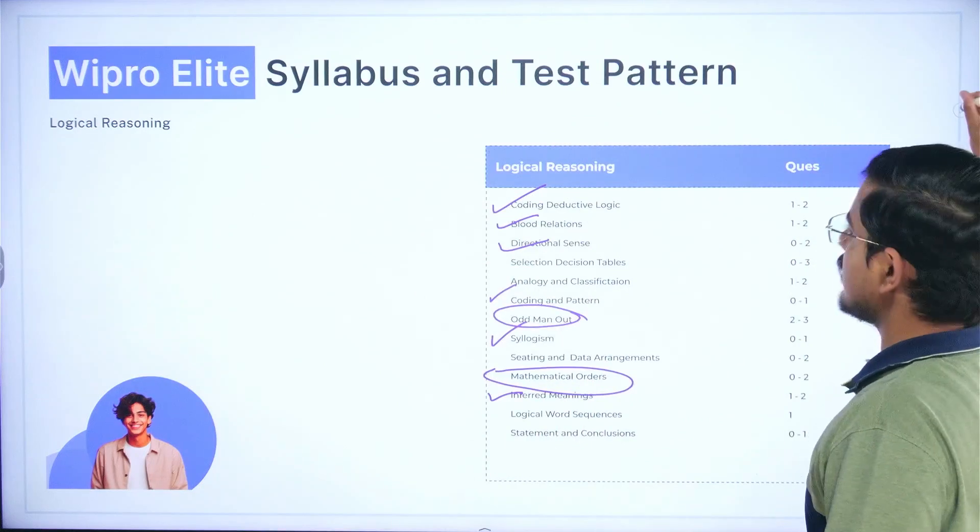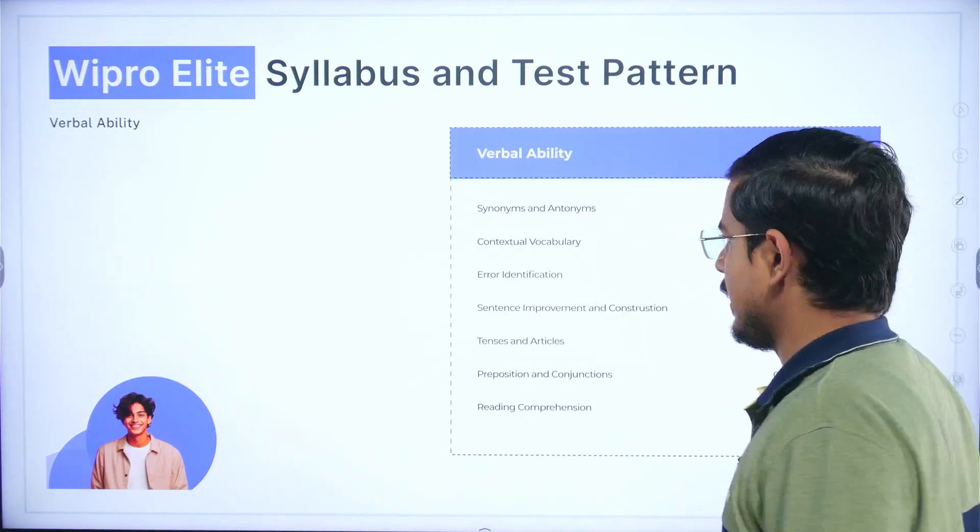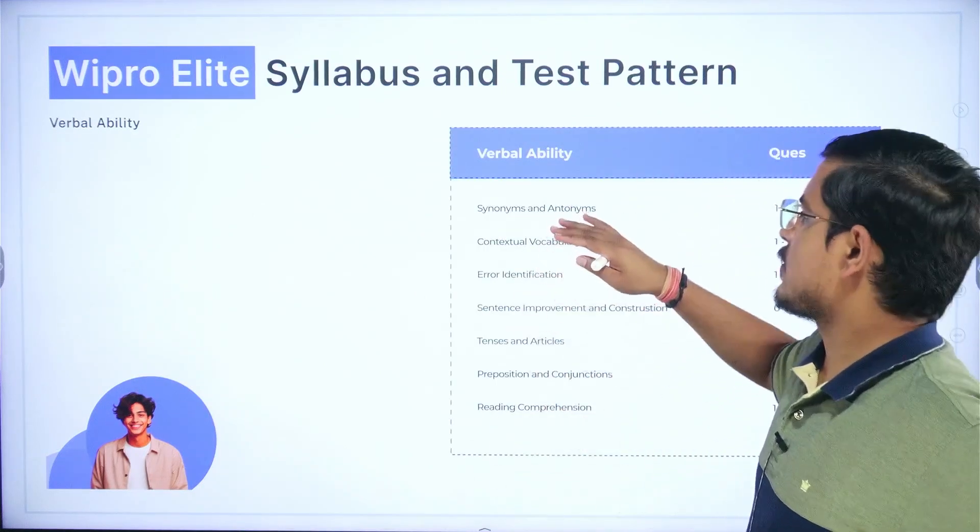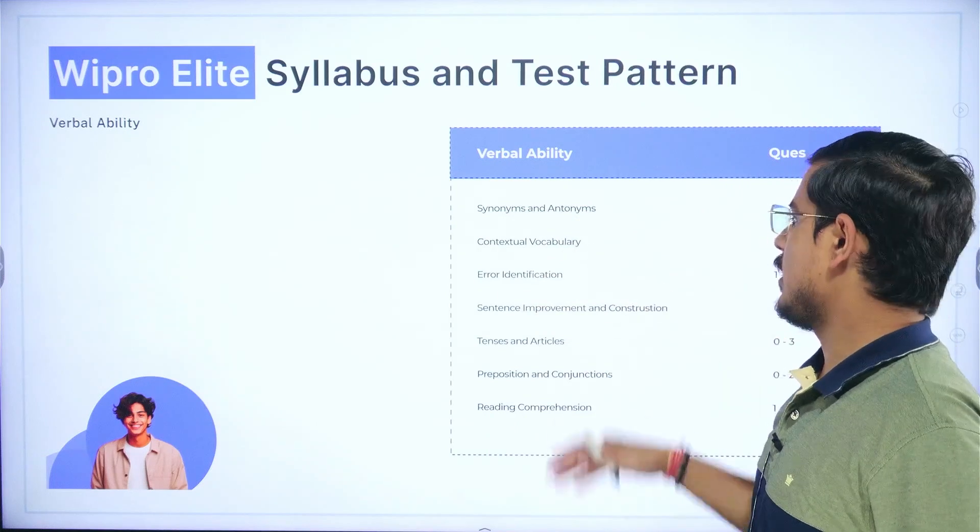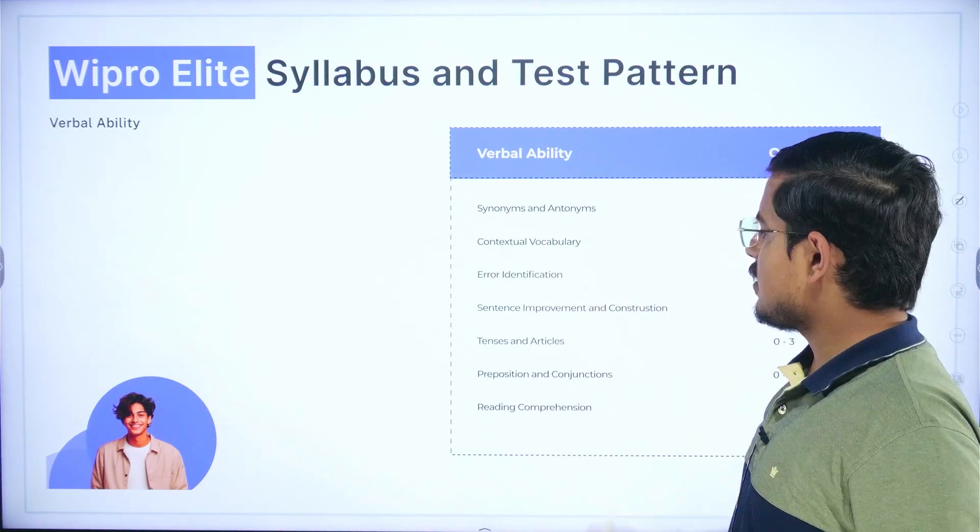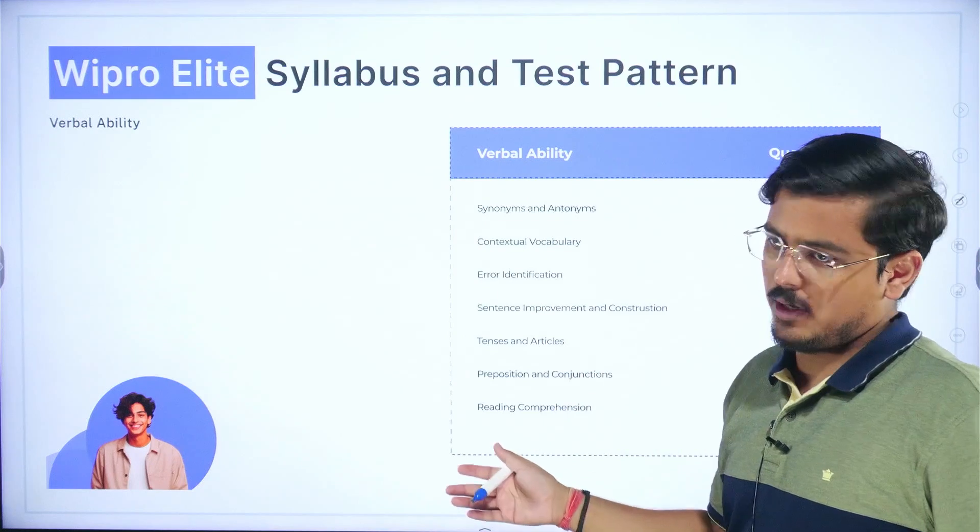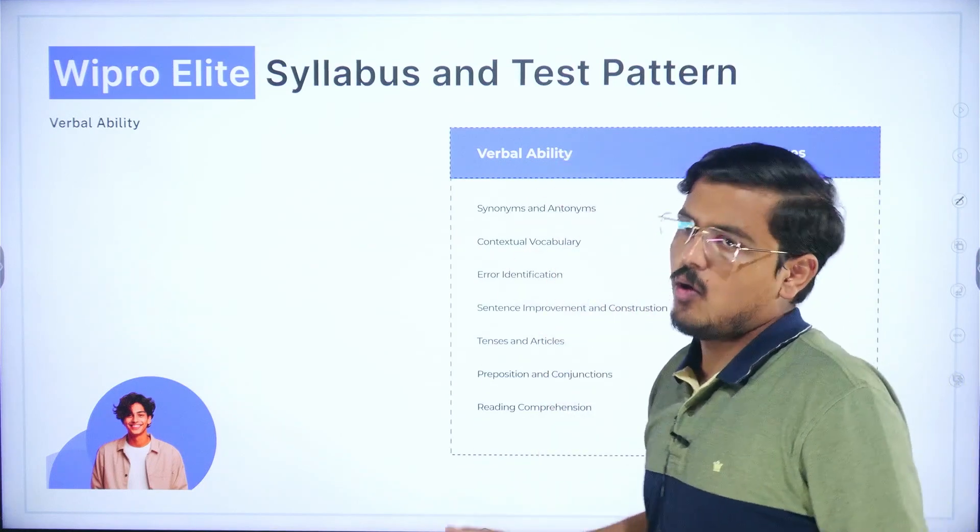For verbal ability you have synonyms and antonyms, contextual vocabulary, error identification, sentence improvement, tenses, prepositions, reading comprehension. This much is for verbal ability.